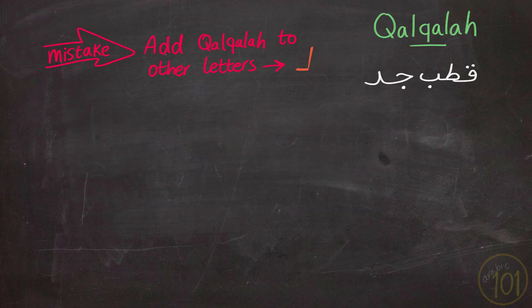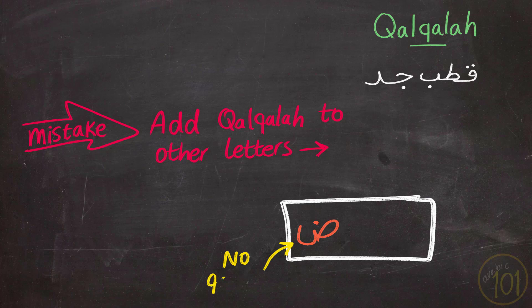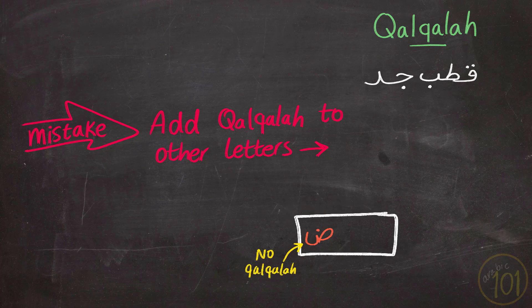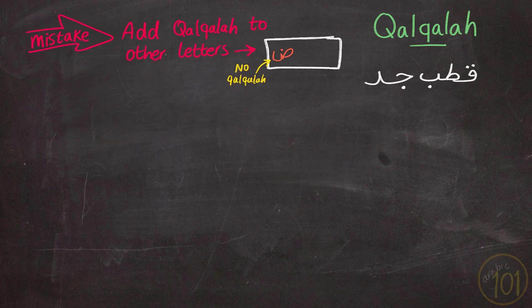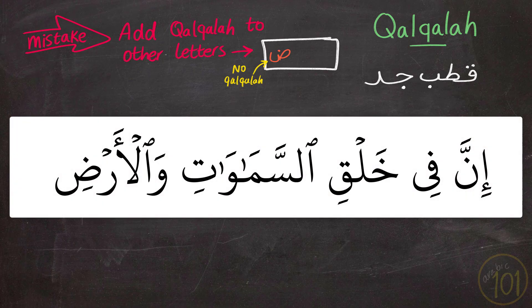When the letter dhaad comes at the end of words and you have to stop at the word, this is usually one of the most common mistakes that happens — people mistakenly add qalqala to the letter when stopping at the dhaad, while dhaad is not one of the qalqala letters.